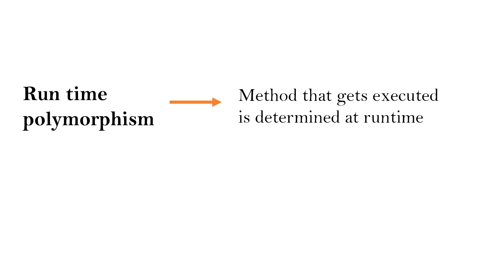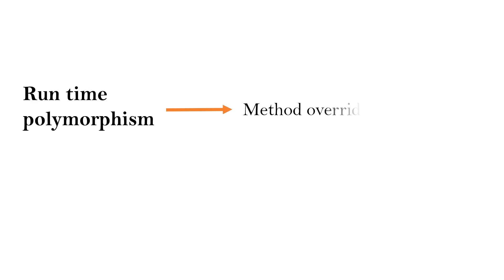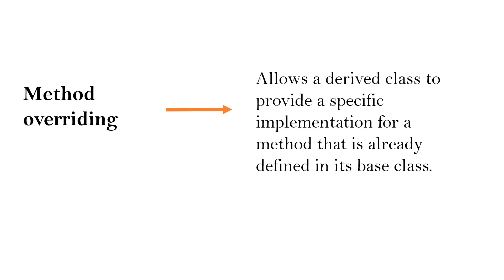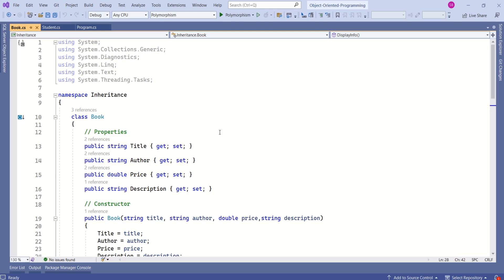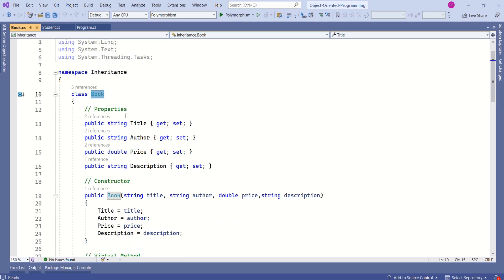In case of runtime polymorphism, the method that gets executed is determined at runtime, and we can achieve it through method overriding. Method overriding is a feature in object oriented programming that allows a derived class to provide a specific implementation for a method that is already defined in its base class.